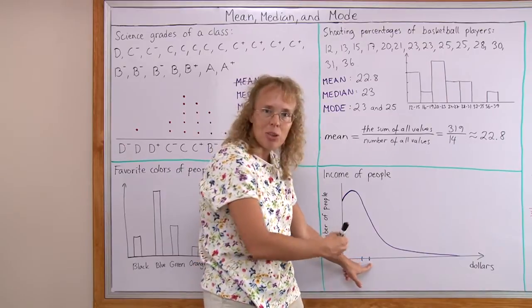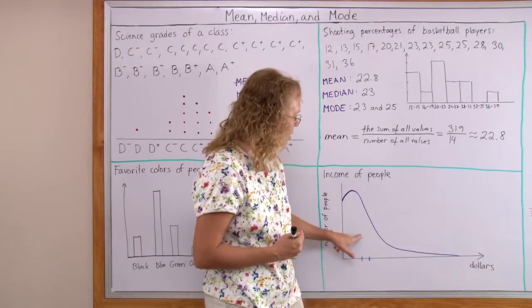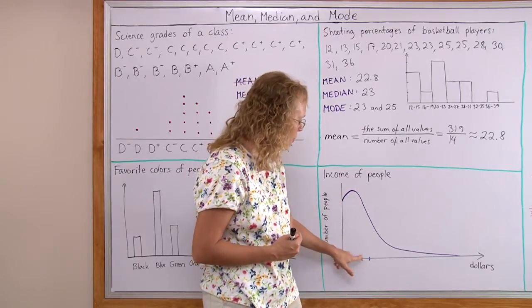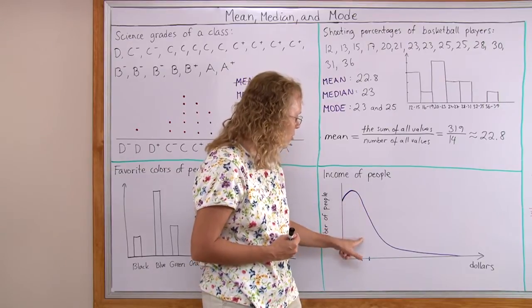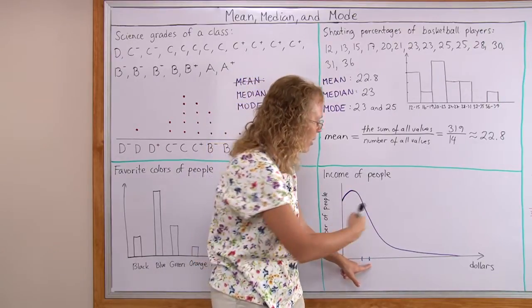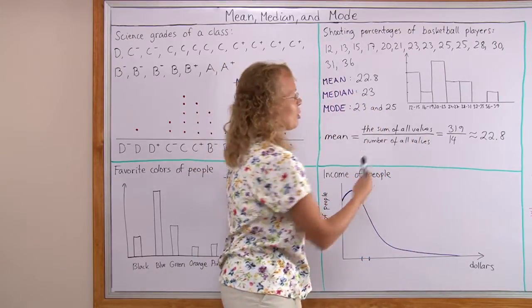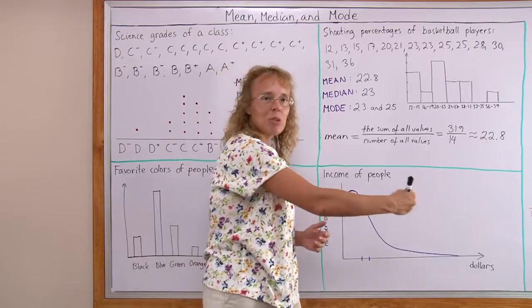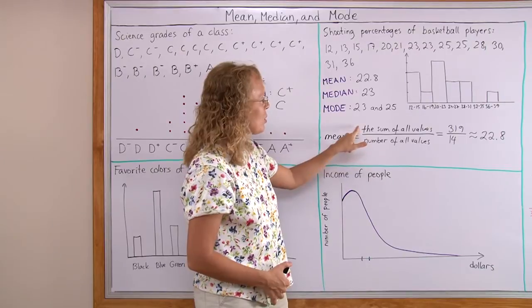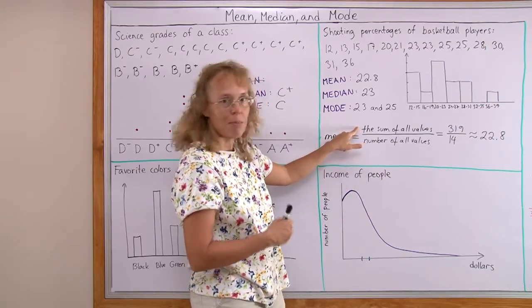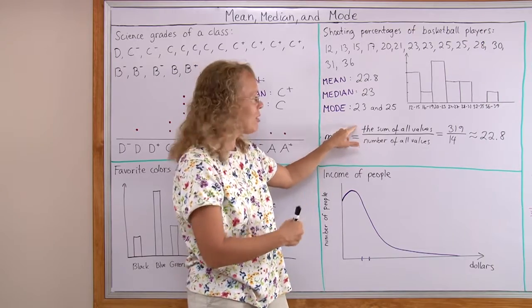The median is the better measure of the central tendency of this distribution here. It follows more closely nearer to the peak. Whereas the mean gets kind of thrown off by all these big numbers from here. Because you're adding the numbers all together. You're adding everybody's incomes together, dividing by the number of all values or number of the people. And so mean gets affected if there are even some very big numbers here to be added to the whole sum.